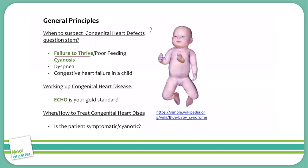Failure to thrive is a really important symptom. The question writers love to use this phrase — failure to thrive and poor feeding — in conjunction with congenital heart defects. Cyanosis is also a very classic symptom of certain types of congenital heart defects; that's when the patient turns blue because they're not able to oxygenate their blood properly. Dyspnea, or shortness of breath, goes along with cyanosis and poor oxygenation.